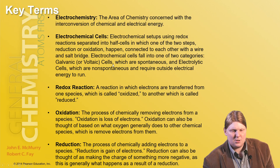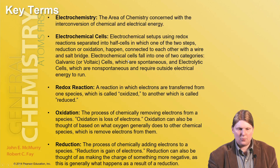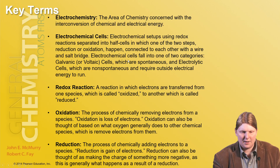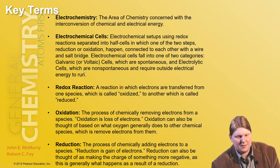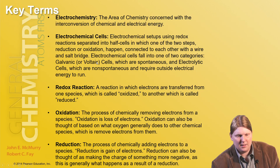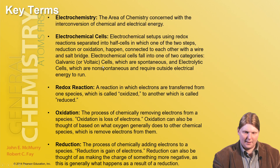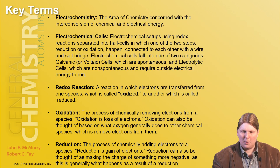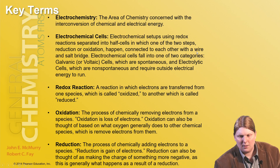This basically forces the electrons to flow through the wire in order to connect the two chemical processes together. The salt bridge keeps each side from accumulating too much charge. Electrochemical cells fall into one of two categories: either galvanic or voltaic, which are spontaneous, and electrolytic cells, which are non-spontaneous and require outside electrical energy to run — like they need to be plugged into a wall.